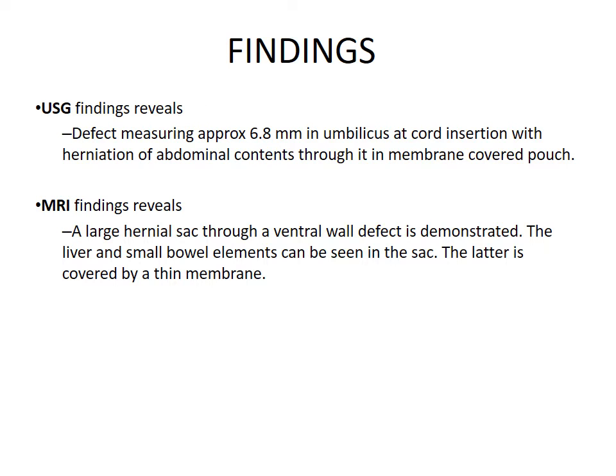Summarizing all the findings: USG findings reveal a defect measuring approximately 6.8 mm in the umbilicus at cord insertion with herniation of abdominal contents through it in a membrane-covered pouch. MRI findings reveal a large hernia sac through a ventral wall defect. The liver and small bowel elements can be seen in the sac.